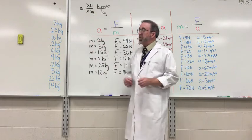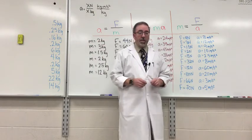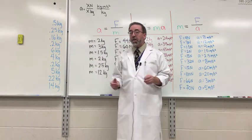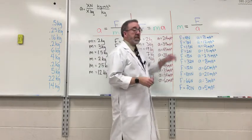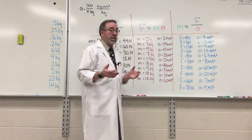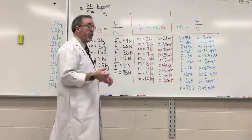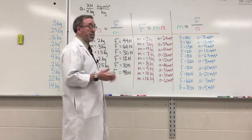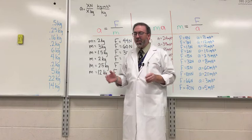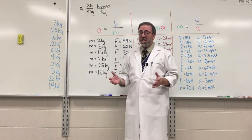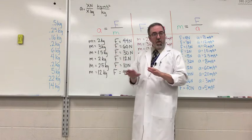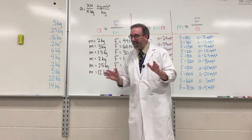So here you have the answers to the m equals f over a equation. It's really important that you put the notation after the number. In mass, it's always measured in kilograms. In force, it's always measured in newtons. And with acceleration, it's always measured in meters per second squared. If you just write the number down and not the notation after it, technically it's not correct. So you really have to pay attention to that, do the right thing, focus. Not too hard, not too hard.